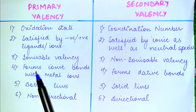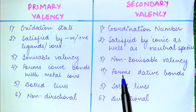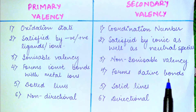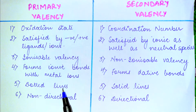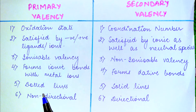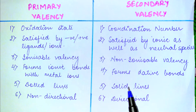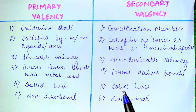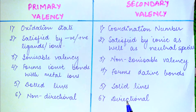Primary valency forms ionic bonds with metals, whereas secondary valency forms dative bonds with metals. Primary valency is represented by dotted lines, while secondary valency is represented by solid lines. Primary valency is non-directional in nature, whereas secondary valency is directional in nature and hence it is responsible for the shape or geometry of the molecule.